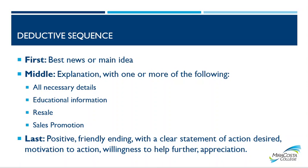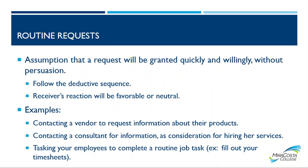A message begins with the main idea, followed by supporting details. First you have the best news or main idea. In the middle you have the explanation, with one or more of the following: all the necessary details, educational information, resale, or sales promotion. At the very end you have a positive, friendly closing with a clear statement of action desired, motivation to action, and willingness to help further or appreciation — because you always want to close keeping that relationship solid. That's not difficult when you're giving good news.